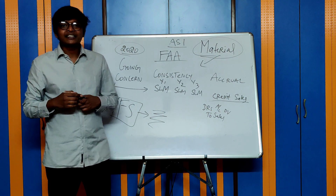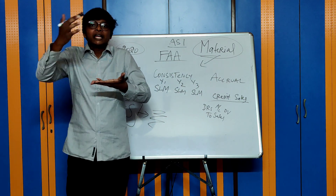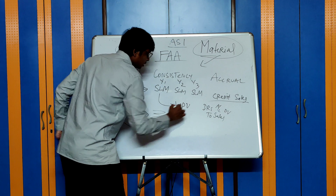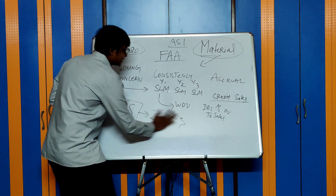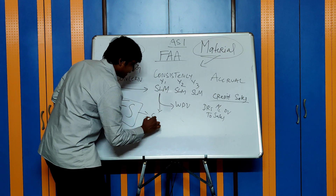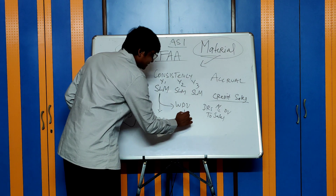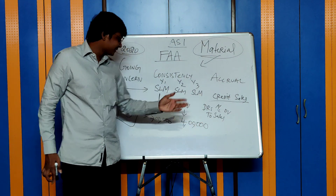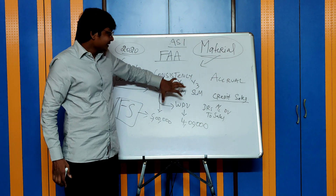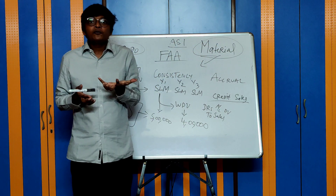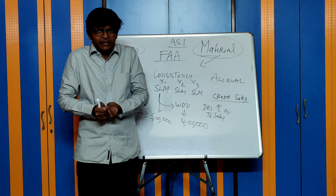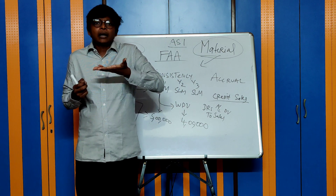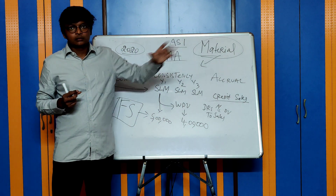Whenever there is a change in accounting policy, the company must disclose whether there is any material effect on the financial statements and how much it is affecting profits. If the change can be quantified — for example, under SLM depreciation is ₹5 lakhs, and after changing to WDV it is ₹4 lakhs — then the disclosure must state: 'Because of the change in method of depreciation, my profit has increased by ₹1 lakh.' If the amount of change cannot be quantified either in the current or future period, then the fact of the change itself must be disclosed in the financial statements. This concludes AS1.